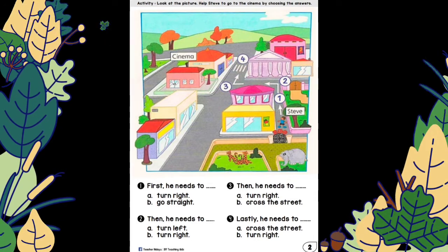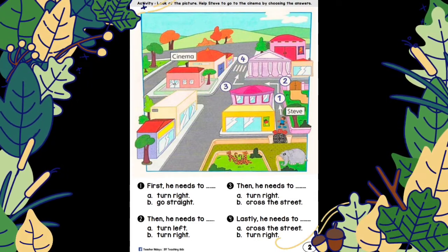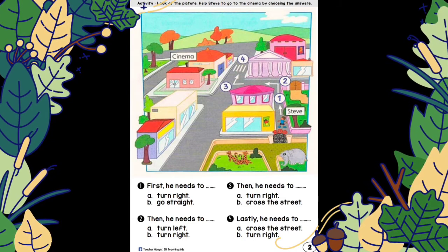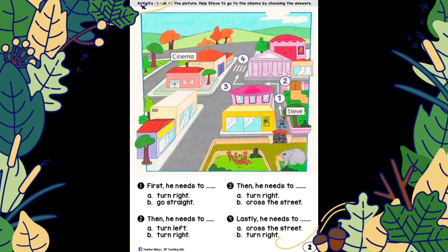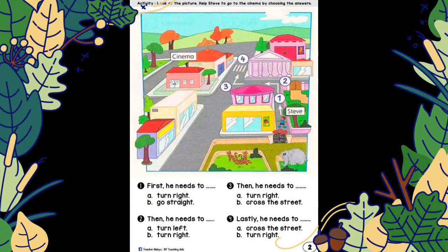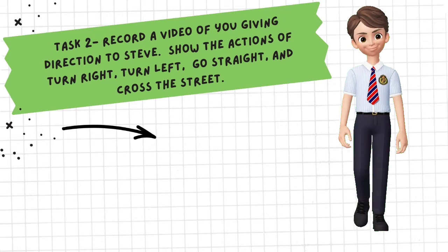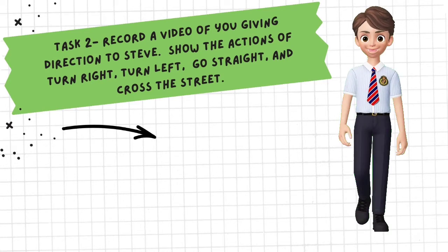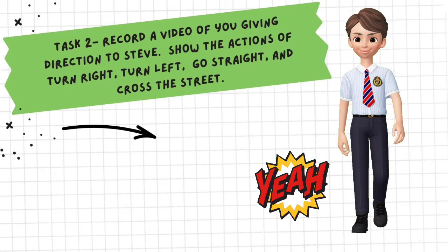Firstly, you have to answer this worksheet. Circle the answer, then speak up. First, he needs to go straight. Number one has been done for you. You have to continue for the other directions too. Good luck!